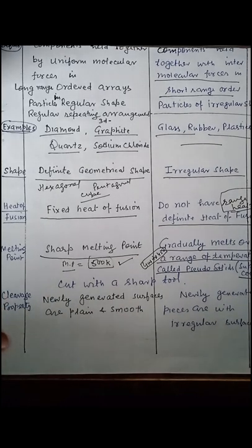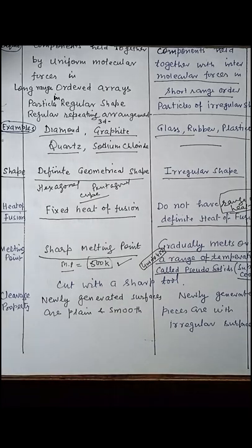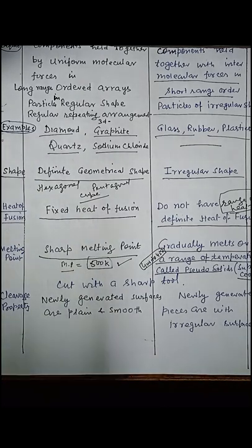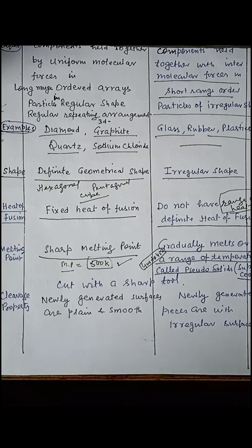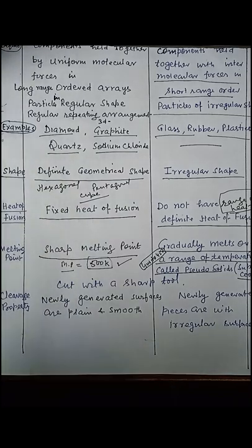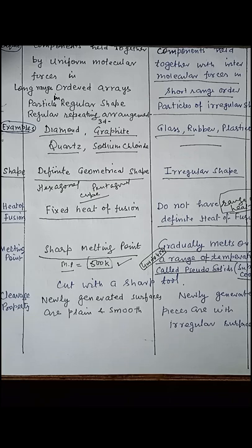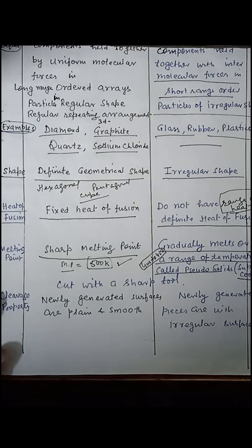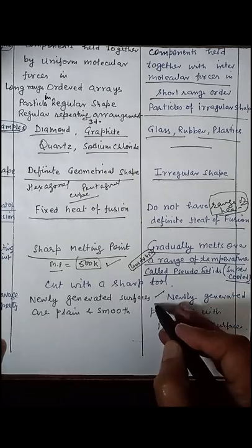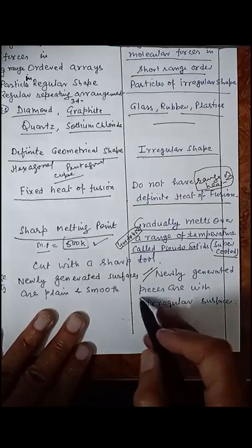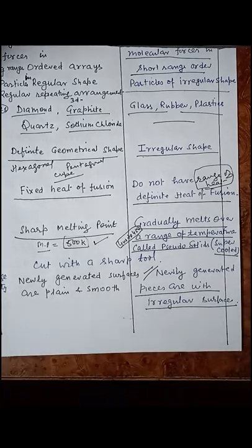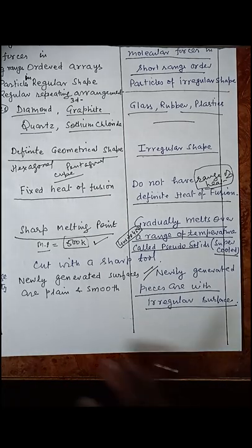Another difference is cleavage property. Cleavage property refers to how a solid behaves when cut with a sharp tool. In crystalline solids, when cut with a sharp tool, the newly generated surfaces are plain and smooth. But in amorphous solids, the newly generated pieces have irregular surfaces — they are not regular and not smooth.